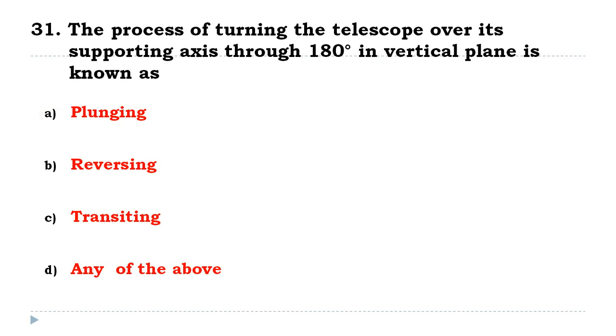The process of turning the telescope over its supporting axis through 180 degrees in vertical plane is known as plunging or reversing or transiting.